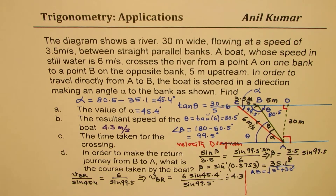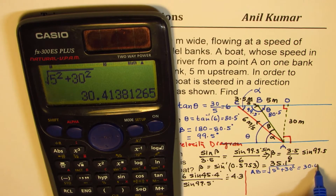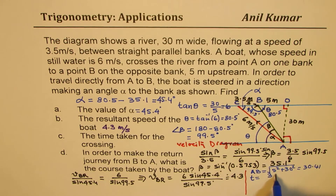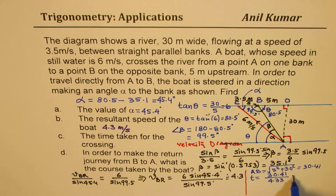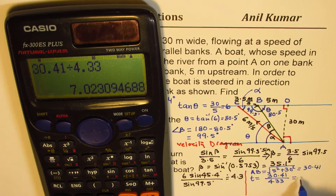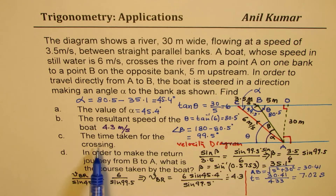AB equals the square root of 5 squared plus 30 squared, which in decimals is 30.41. So the time T equals the distance divided by velocity: 30.41 divided by 4.33, which gives us 7.02 — so approximately 7 seconds. That's the time taken for the crossing. We've now completed the first three parts.